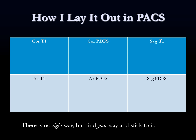This is how I lay out the images in PACS most of the time. I like to have coronal images at the top left, axial images at the bottom left, and sagittal images towards the side — on a multi-monitor setup with a 4x4 configuration. The other part of the monitor can be used for comparison. My advice is to find what works for you and be consistent about it every time.